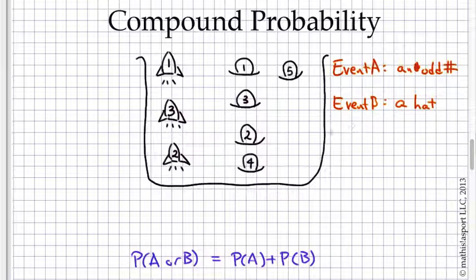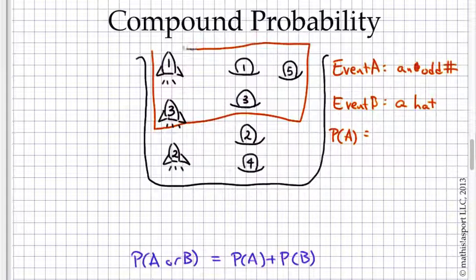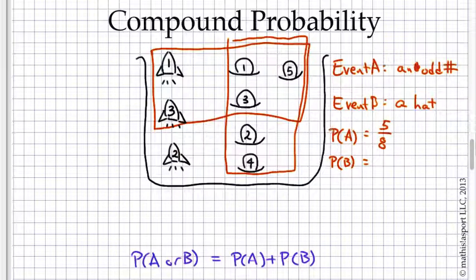What's the probability of event A? Odd numbers. Well, these are the odd numbers. And there's five of them. So that must be five out of eight. Probability of B. Well, that's just choosing a hat. These are all the hats. And so that, there's five hats, so that's also five out of eight.